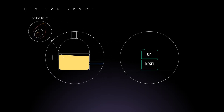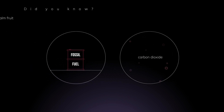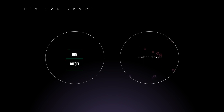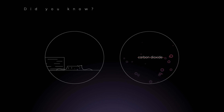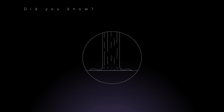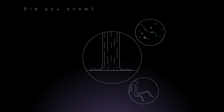Did you know that palm oil is increasingly used to make biodiesel to replace fossil fuels? This doesn't make climate sense. Why? Because you are simply replacing the fossil fuels that prevent carbon dioxide entering the atmosphere, and instead cutting down trees which would have absorbed the carbon dioxide in the first place. Much like the ocean, trees are like the lungs of the planet — they take in carbon dioxide from the atmosphere, storing the carbon to build their roots, leaves, and branches, and returning oxygen back into the atmosphere.